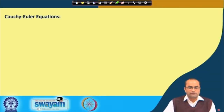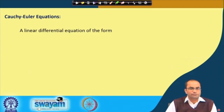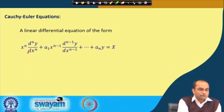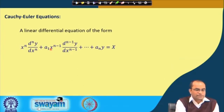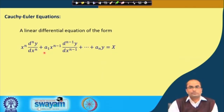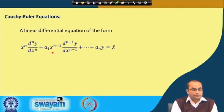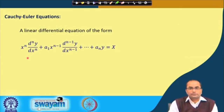The Cauchy-Euler equations are equations with non-constant coefficients. So far we have learnt linear differential equations with constant coefficients. This is one special kind of equation with non-constant coefficients, where we see x^n coming, then x^(n-1) with the (n-1)th derivative, and so on. Here a₁, a₂, ..., aₙ are constants, but together with them we have x^n, x^(n-1), x^(n-2), and so on. We will look into how to solve such equations when we have non-constants as the coefficients of these derivative terms.